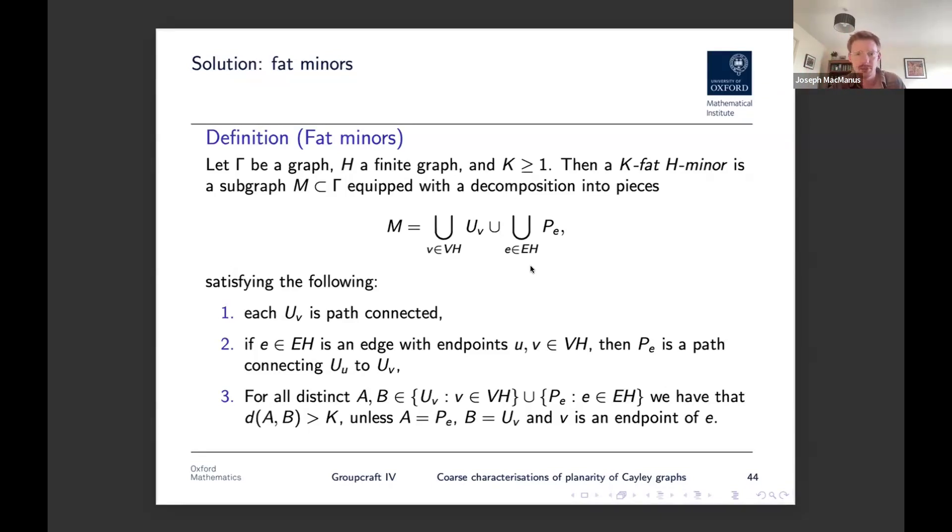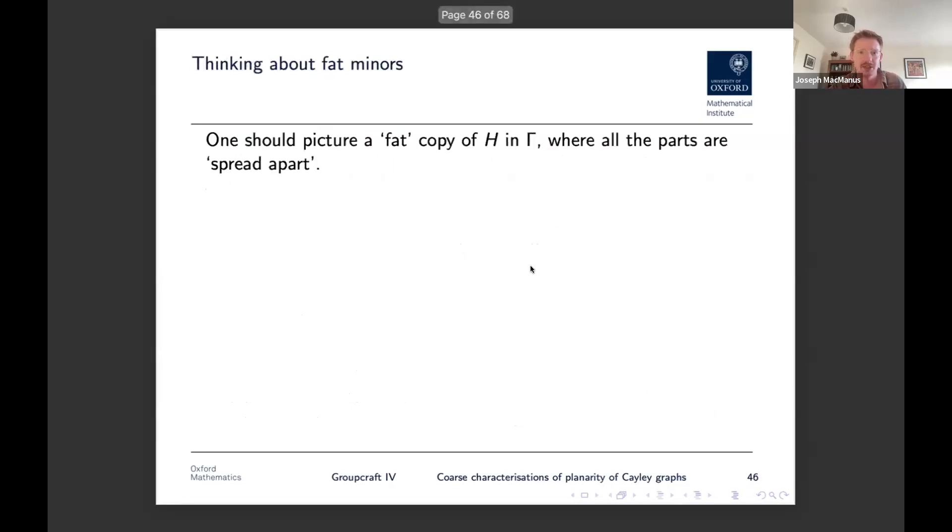So for example, the picture to have in mind is, we're thinking about fat minors, that's an unfortunate title, but one should picture a fat copy of H in gamma, where all the parts are spread apart. So here's our copy of H. And then in gamma, we see this M, which is our fat H. And you sort of see, we have these like vertex spaces, the U_Vs, which correspond to the vertices of H. And we have the edge paths joining them together, sort of recreate the structure of H. And anything which shouldn't be close together, isn't close, isn't close together. So unless they are literally like joined in the graph, things are spread out, where how spread out they need to be is quantified by this K.